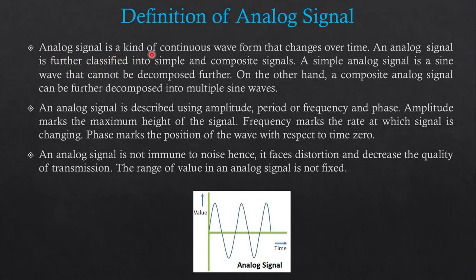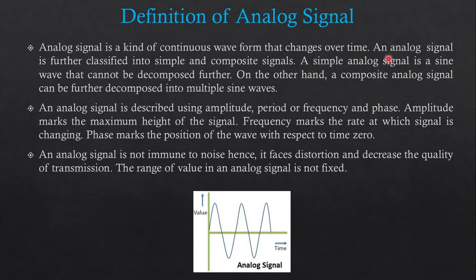An Analog Signal is a kind of Continuous Wave that changes over time. An Analog Signal is further classified into Simple and Composite Signal. A Simple Analog Signal is a Sine Wave that cannot be decomposed further. On the other hand, a Composite Analog Signal can be further decomposed into Multiple Sine Waves. The Simple Analog Signal can be represented by a single mathematical equation, while the Composite Analog Signal is a combination of different Sine Waves or Cosine Waves.